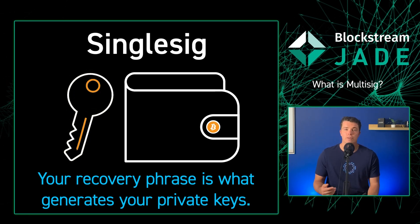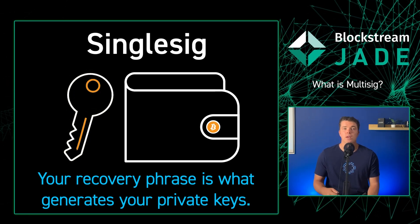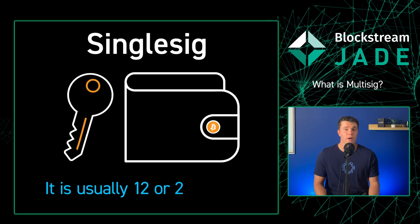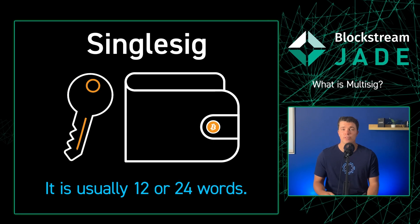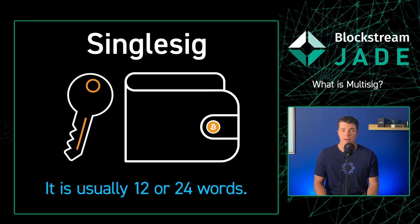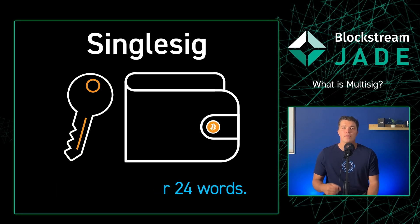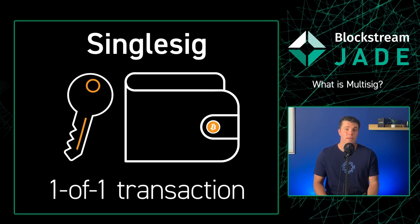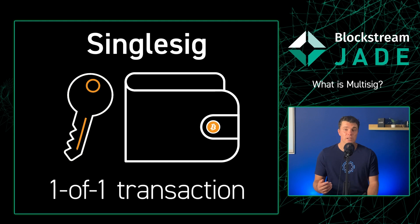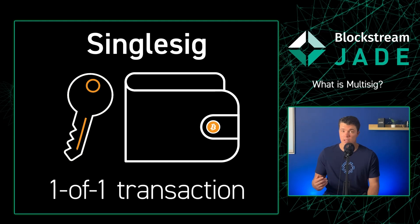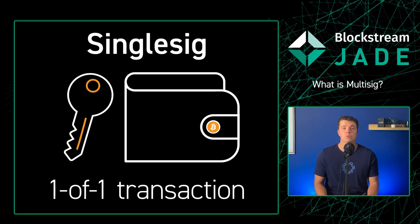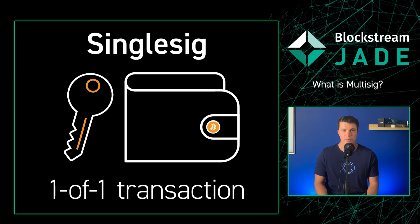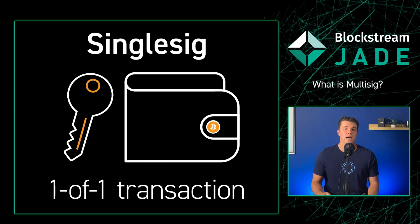When you send Bitcoin from this address, you need to sign the transaction using your private key to prove your ownership of the funds. This is a one-of-one transaction, because only one signature from a single private key is required to authorize the transaction.